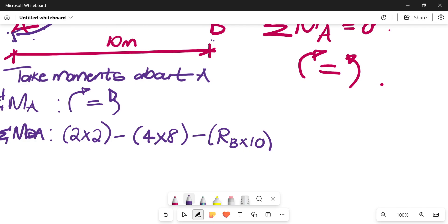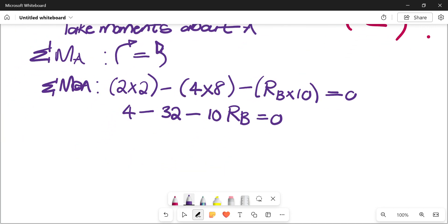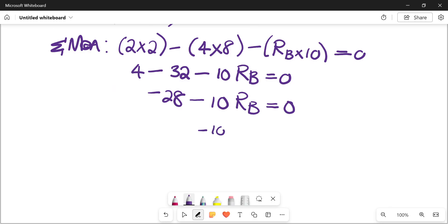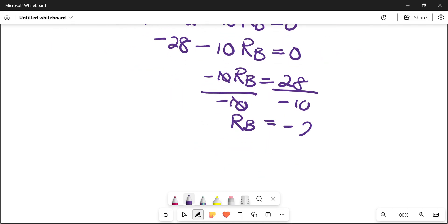Okay, are we still on the same pace? Then you equate this to 0 because you're trying to solve for an actual figure. So on here we have 4. On here we have 4 times 8 minus 32 minus 10 RB is equals to 0. 4 minus 32 is minus 28 minus 10 RB is equals to 0. Then minus 10 RB is equals to 28. Divide by negative 10. RB is a negative 2.8.